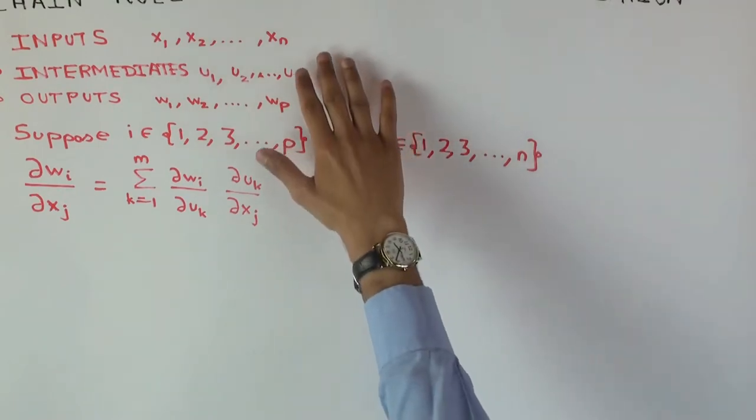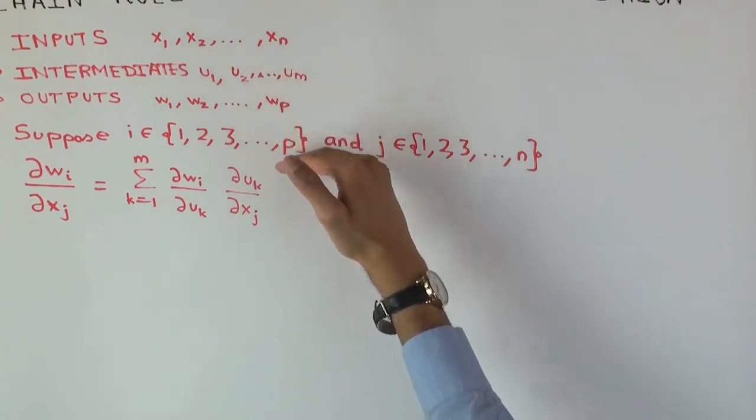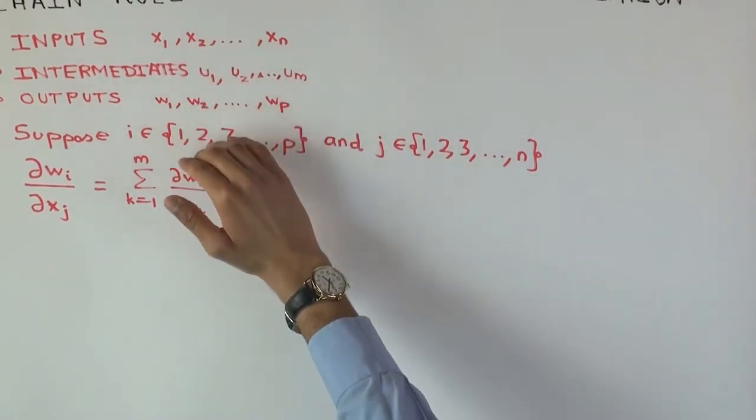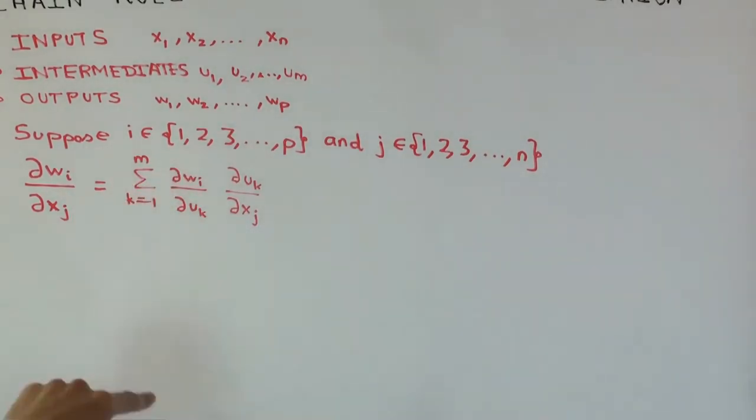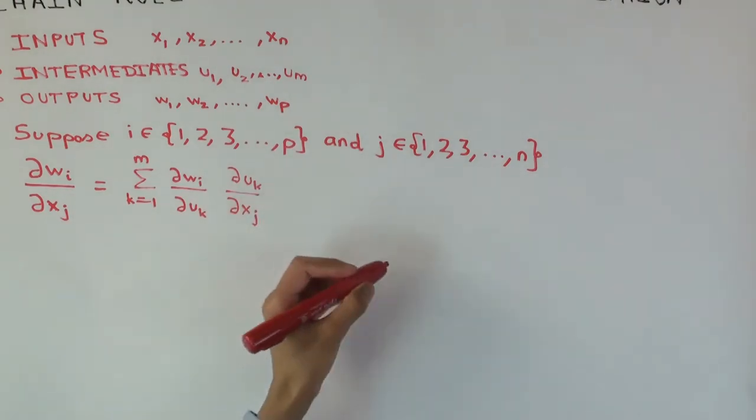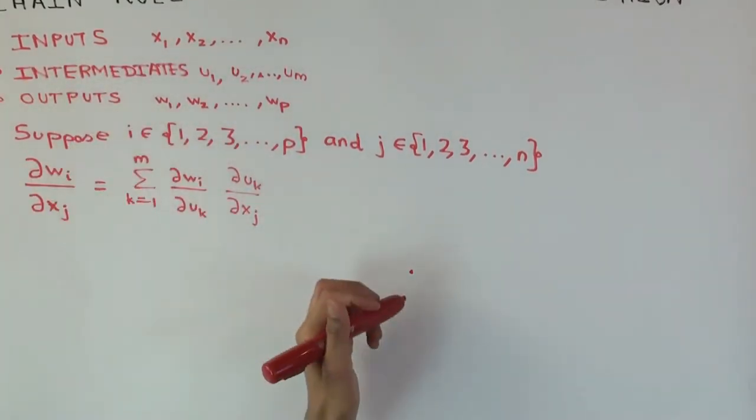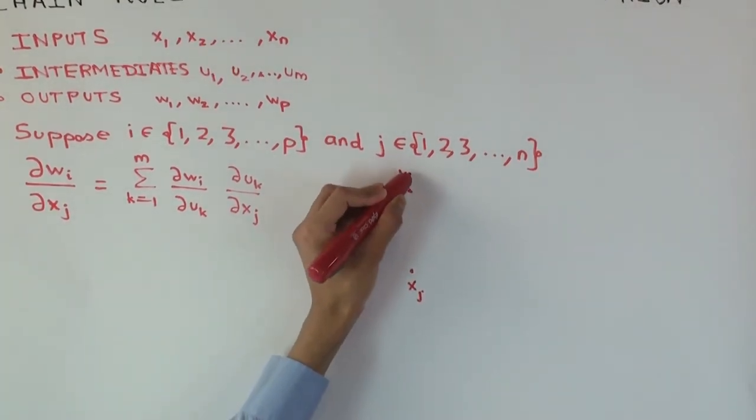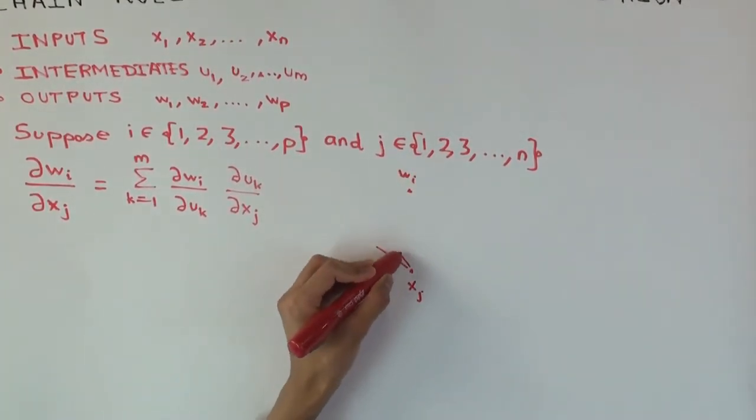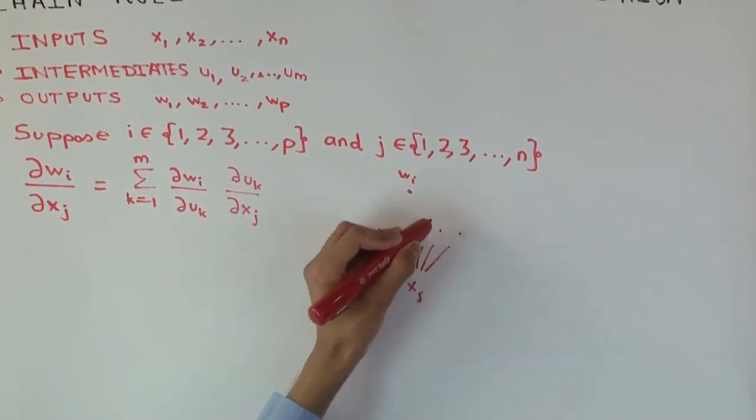Now you could imagine another type of composition where you have more than two levels of composition, like three levels. You have inputs, first-level intermediate, second-level intermediate, and output. In that case, you would have to find all parts, so you would have a more complicated type of summation. Let me just make a pictorial thing which will make it clear.